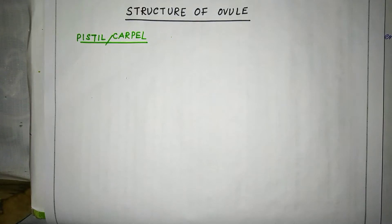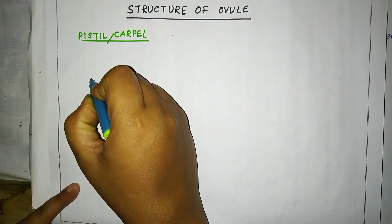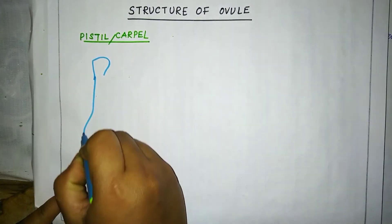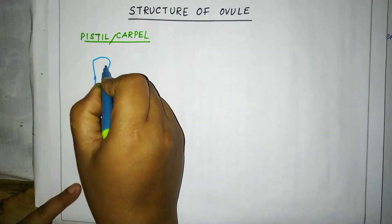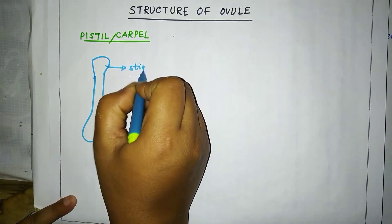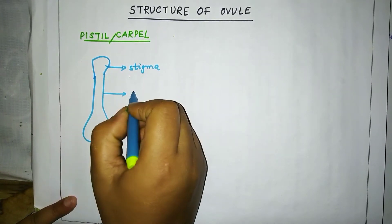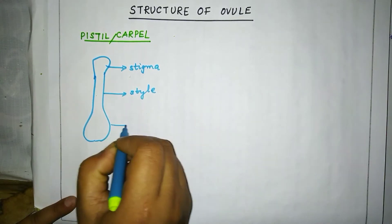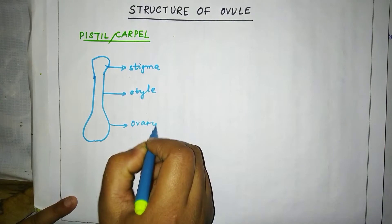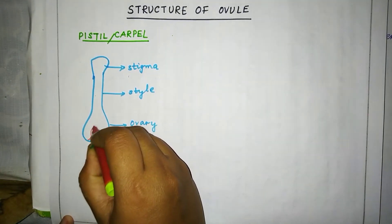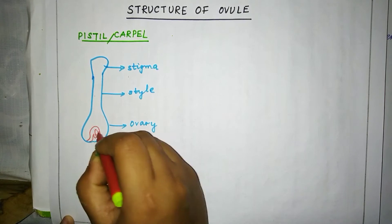Hello, today we will discuss the structure of ovule. As we know, ovule is present inside the ovary, and ovary is a part of carpel. Carpel is also known as pistil. The pistil has three parts: the uppermost part is known as stigma, the middle part is known as style, and the lowermost portion is known as ovary. Inside the ovary, ovule is present.